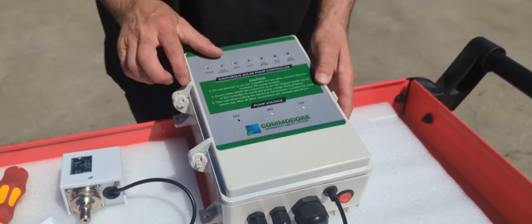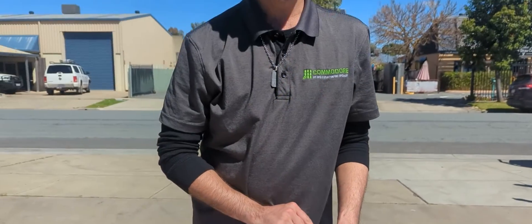Now when the pressure switch engages, the tank full light will light up red. When it disengages, it'll turn off.